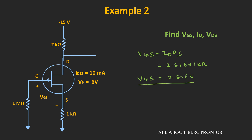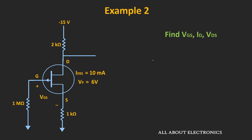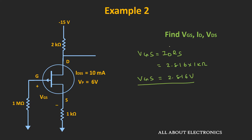To validate the saturation assumption for the P-channel JFET, the condition is VDS ≤ VGS − VP. With VGS = 2.816 V and VP = 6 V, we get VGS − VP = −3.184 V. Since VDS = −6.552 V is less than −3.184 V, the circuit is indeed operating in the saturation region, confirming our assumption.